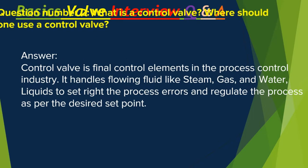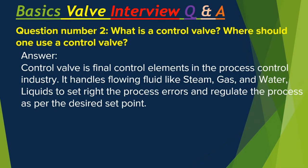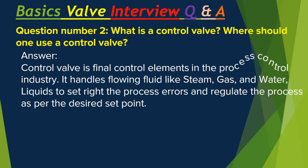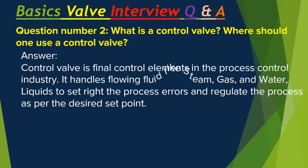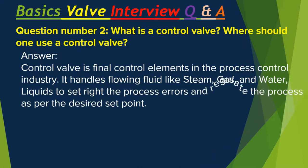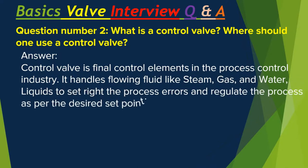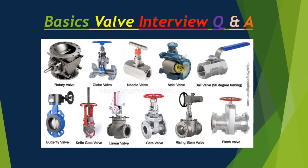Question number two: What is a Control Valve? Where should one use a Control Valve? A Control Valve is the final control element in the process control industry. It handles flowing fluid like steam, gas, and water, and liquids to set right the process errors and regulate the processes per the desired set point.